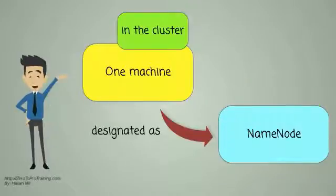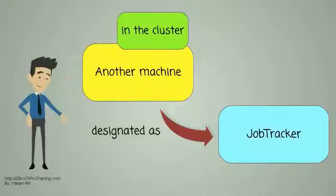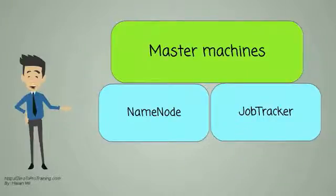In a typical configuration, one machine in the cluster is designated as the name node, while another machine serves as a job tracker. Name node and job tracker are the master machines.